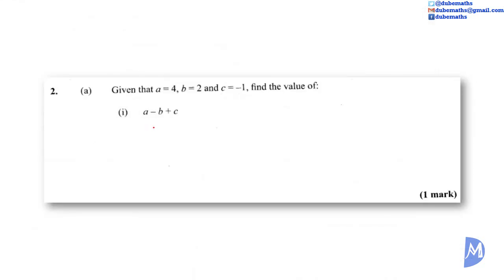2A. A subtract B plus C. A is equal to 4, subtract B, B is equal to 2, and C is equal to minus 1. Add it to negative 1. 4 subtract 2 is equal to 2. 2 subtract 1 is equal to 1.